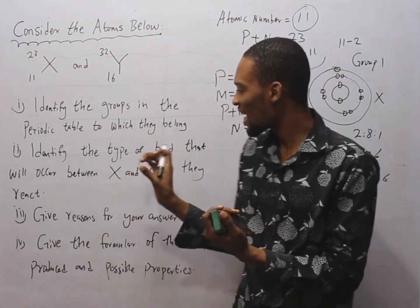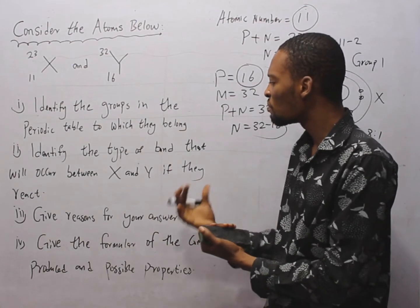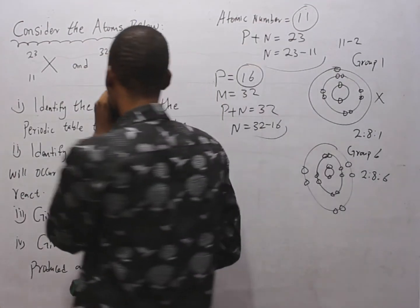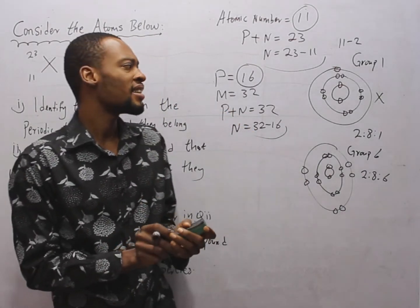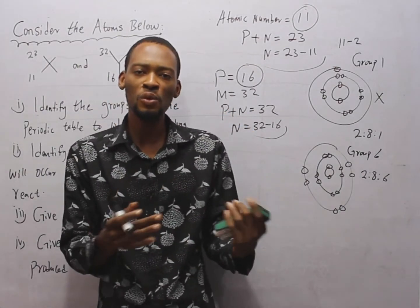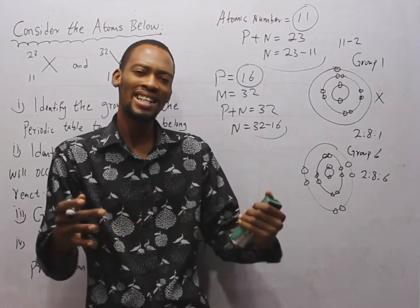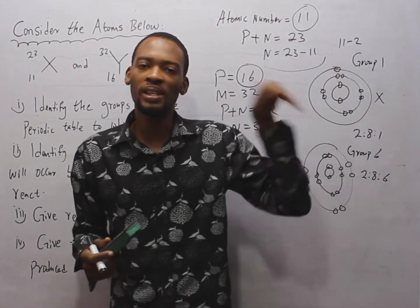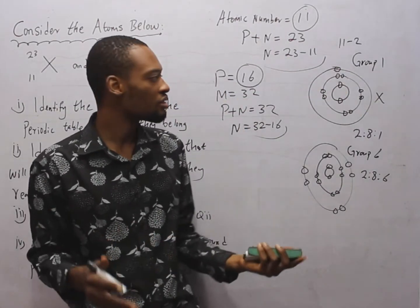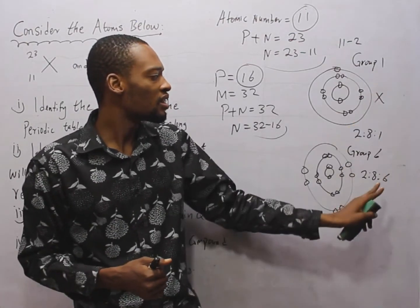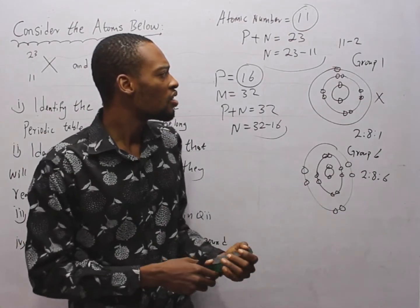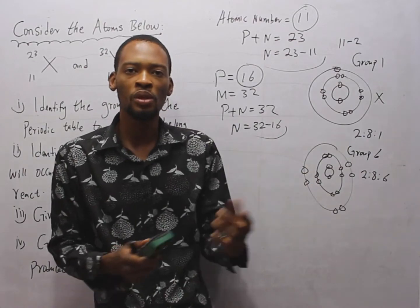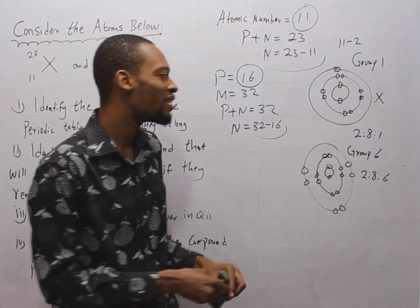The second question asks: identify the type of bond that will occur between S and Y if they react. Ionic or electrovalent bonds are formed between elements that are wide apart in the periodic table with a large electronegativity difference. S is in Group 1 and Y is in Group 6 — the electronegativity difference is wide and they are far apart in the periodic table. Therefore, the bond formed will be ionic bonding.